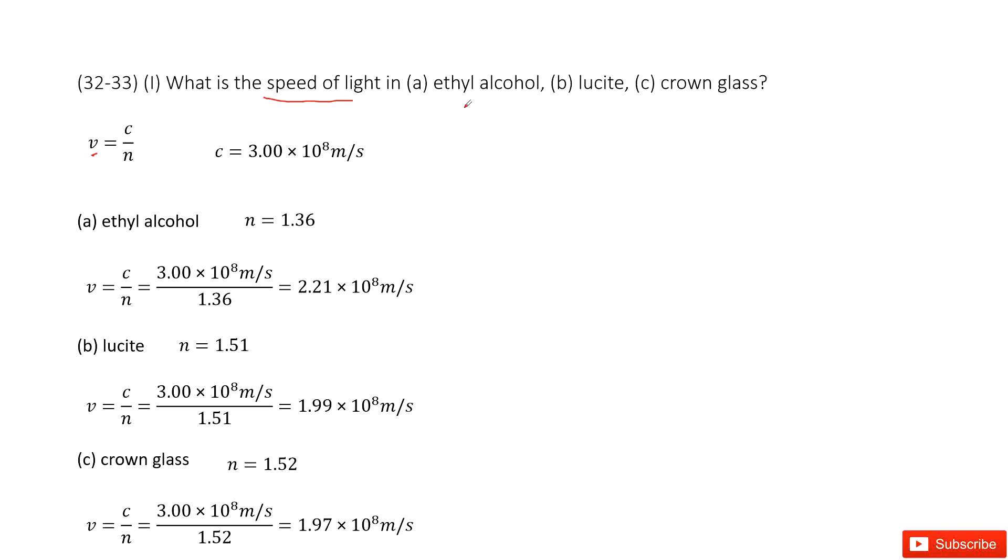We look at the first object, ethyl alcohol. We check the textbook. We know the n is 1.36. We input c and n, so we can get the final answer there.